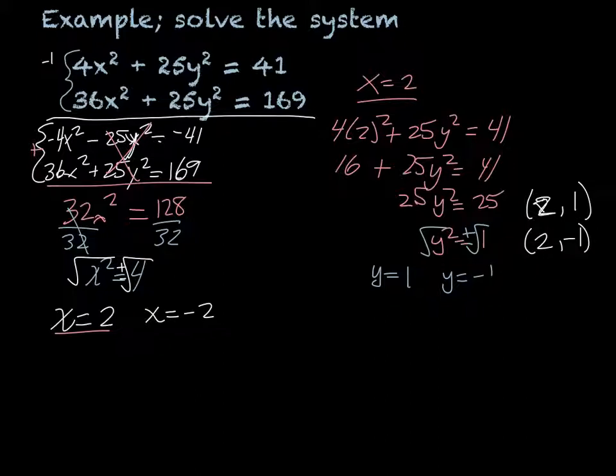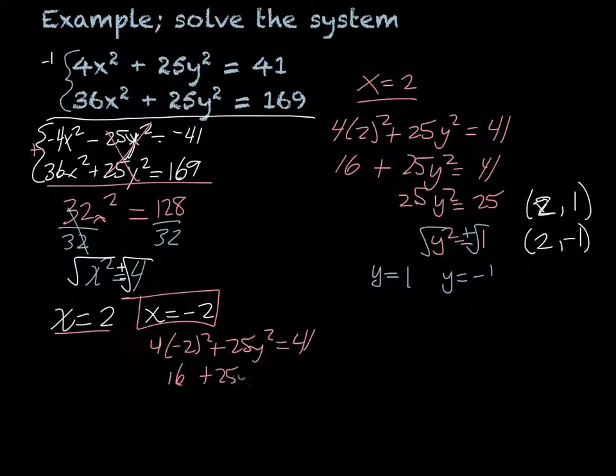So 4 times negative 2² + 25y² equals 41. So that would be negative 2 times negative 2 is positive 4, times 4 is 16, plus 25y² equals 41.